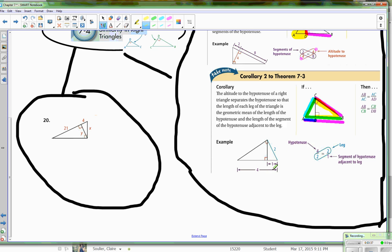And the way that looks here is 4 over 2 is equal to 2 over 1, where 4 is the hypotenuse of the big triangle and 2 is the hypotenuse of the smaller triangle.